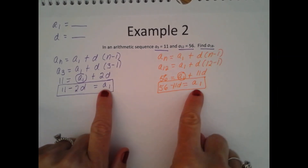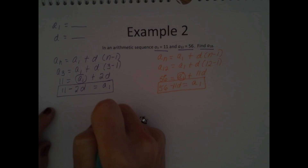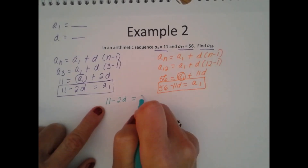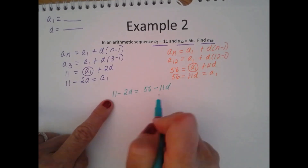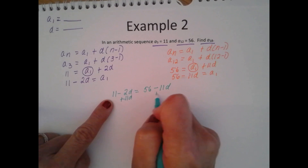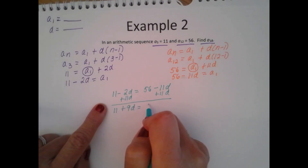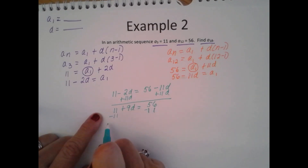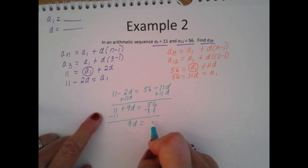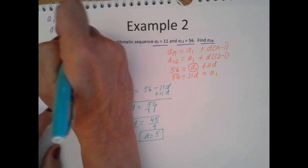Now since we solved both for A sub 1, I know that these are equal. I'm going to set them equal: 11 minus 2D is equal to 56 minus 11D. I'm going to get my variables on one side and my numbers on the other. Adding 11D to both sides gives me 11 plus 9D is equal to 56. Then subtracting 11 from both sides gives me 9D is equal to 45. Dividing by 9 on both sides: D is equal to 5. So now I have my common difference of 5.